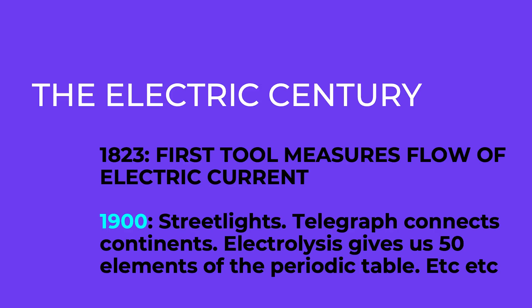Let's go back to the 19th century — around the 1820s. The first electrometer is invented; we've got the battery, or a precursor to it, knocking around. By the end of the 19th century, we've got streetlights in London, we've got the first telegraph connecting continents, we've got the first power line. Electrolysis has added 50 new elements to the periodic table.